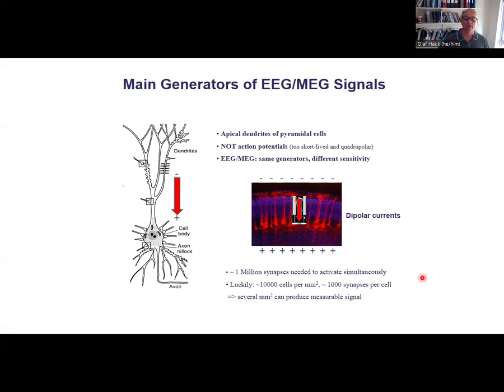And as I said, we can't really look at individual neurons with these noninvasive methods. We need about 1 million synapses to activate simultaneously to produce something we can measure macroscopically outside the head. Luckily, there are about 10,000 cells per square millimeter. These are just figures I found in textbooks. And that means with a few square millimeters of cortex, we are in business, and we can potentially measure the EEG and MEG signals.